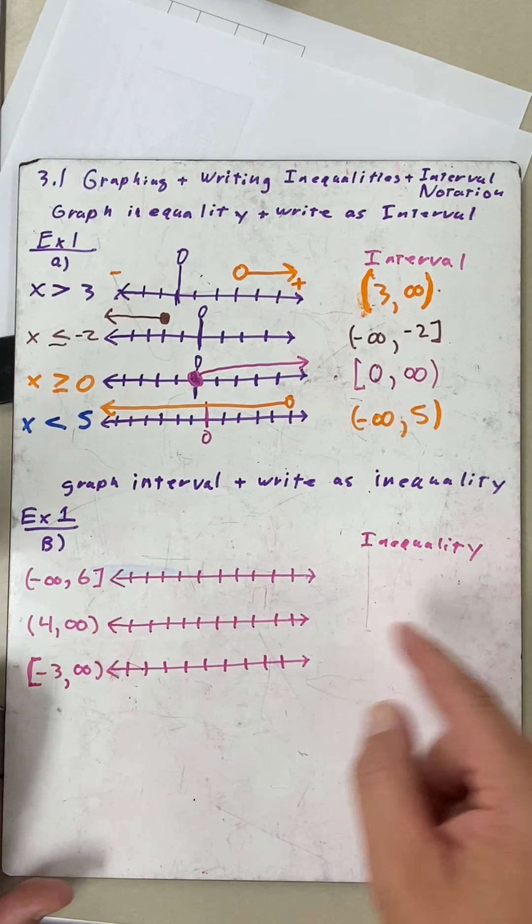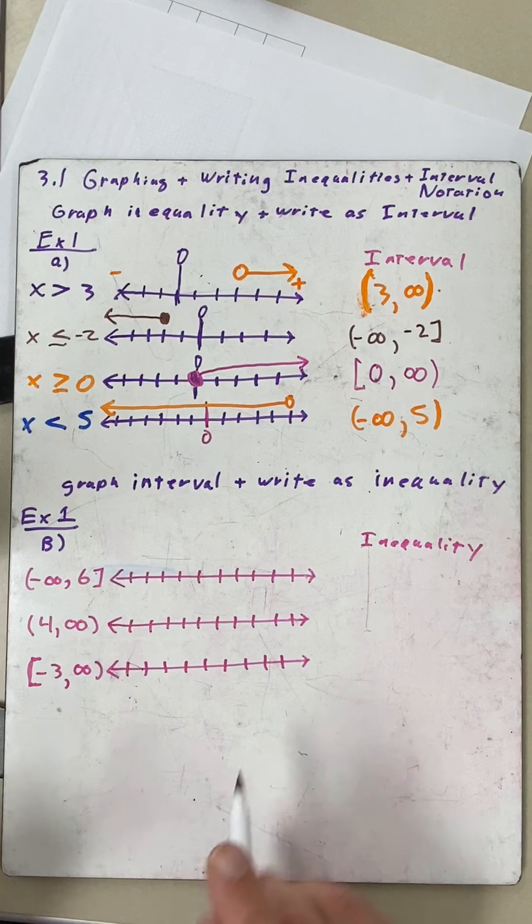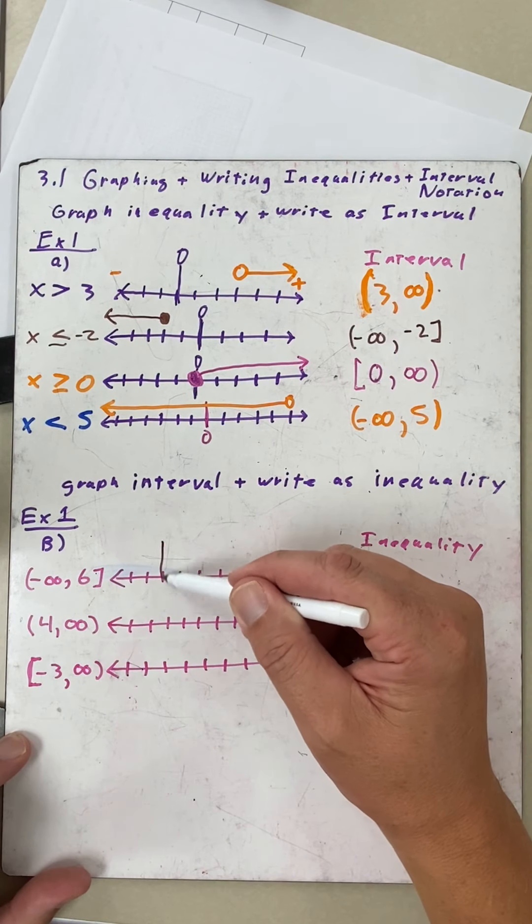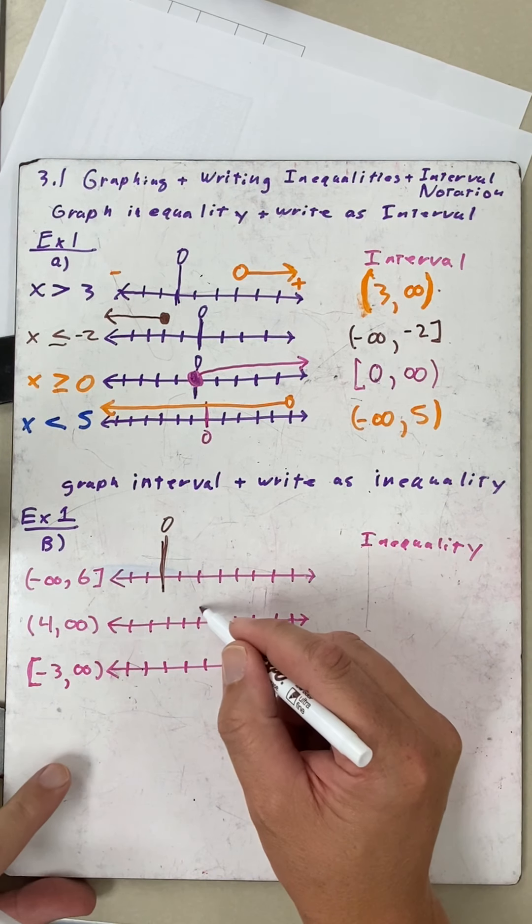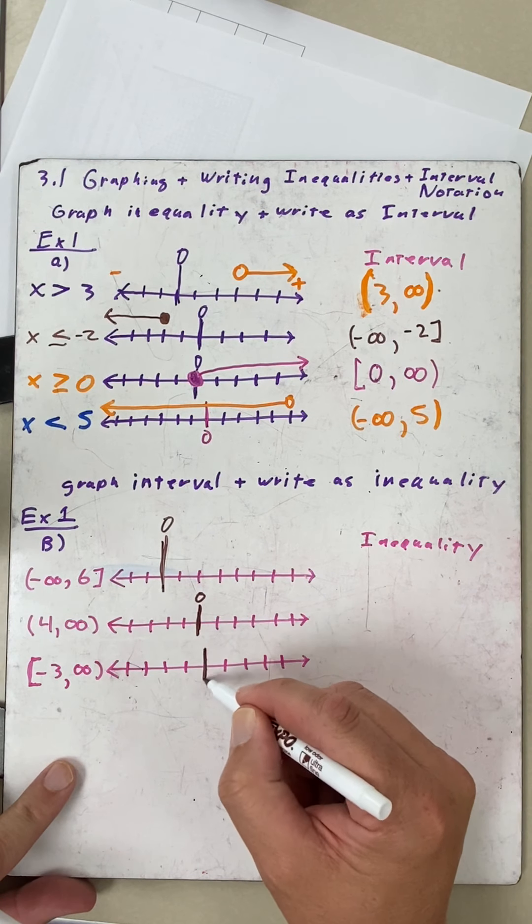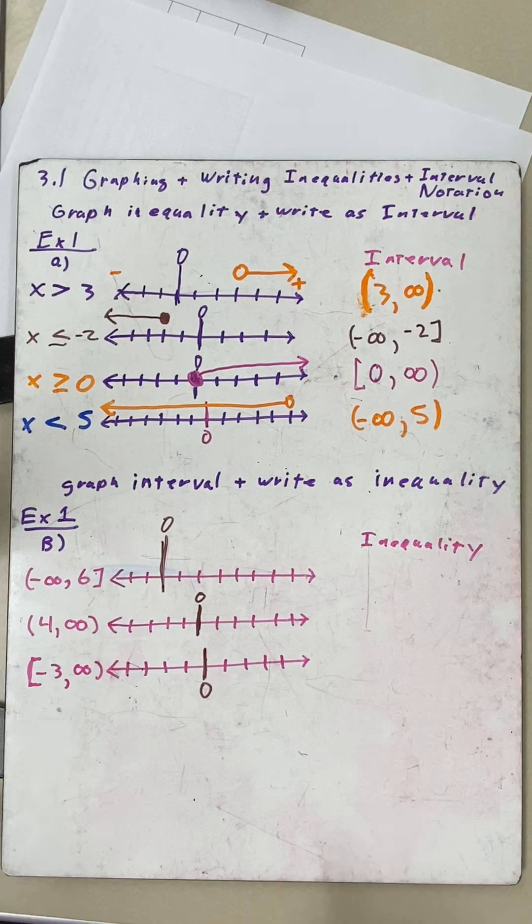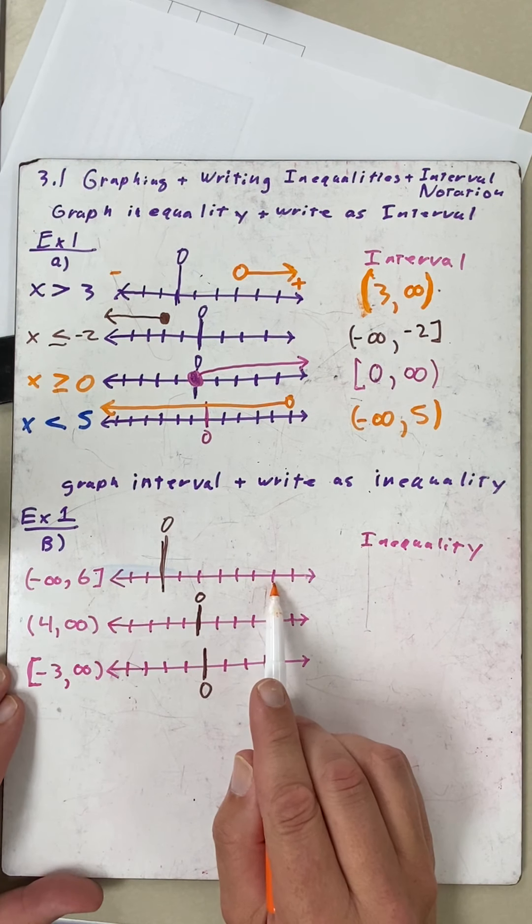Graph it and then write the inequality. The inequality remembers whether greater than or less than. So x ≤ 6. Six is to the right, so maybe I want to move my zero left a little bit. Four is close to the middle, so maybe just go right in the middle here, and same with the three. That's my zero right there.